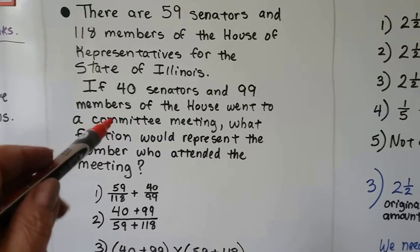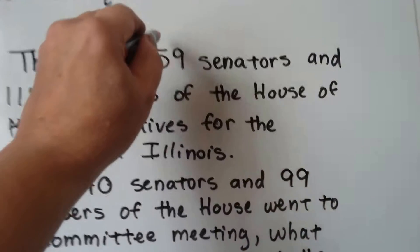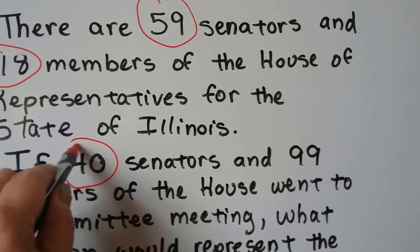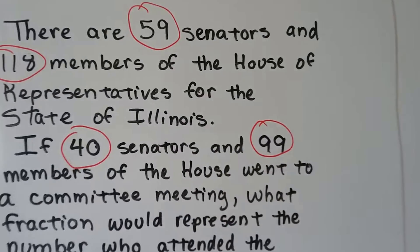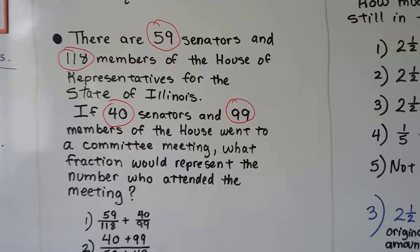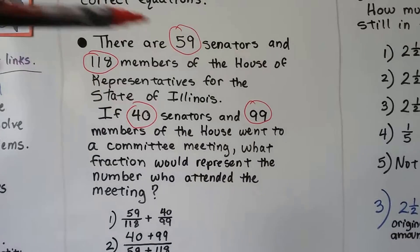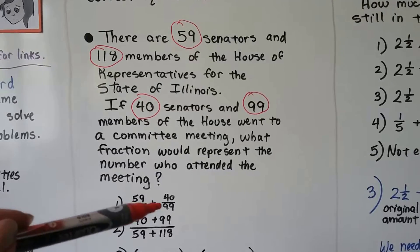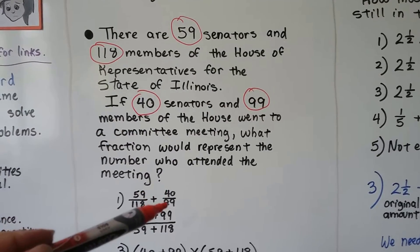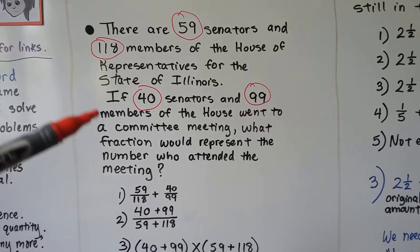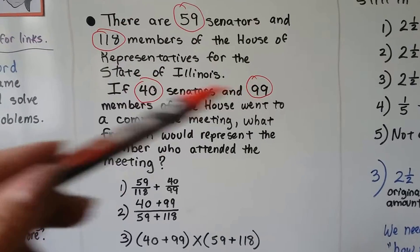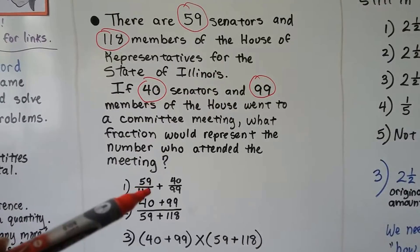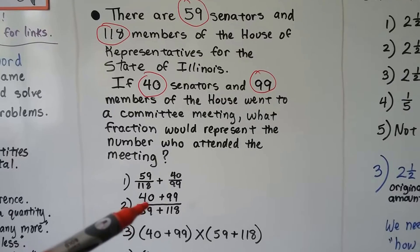So the numbers we can identify are there's 59 senators, there's 118 members of the House. If 40 senators and 99 members of the House went to the meeting, what fraction would we have? So would we do 59 over 118 to have 59/118ths and then add it to the 40 over 99 as 40/99ths? Or would we add these together and write them as a fraction and use 40 plus 99 as the numerator and 59 plus 118 as the denominator?